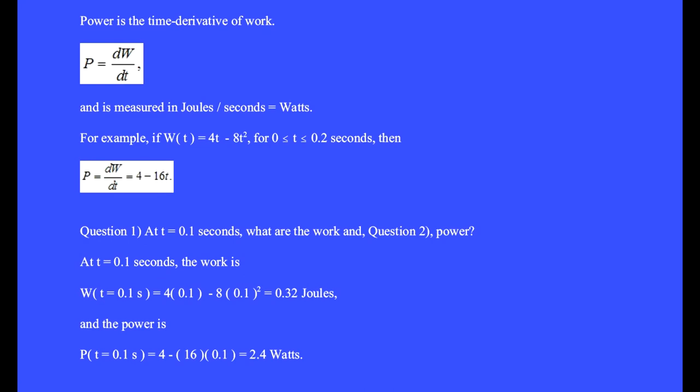For example, if the work varies in time as W(t) = 4t minus 8t squared, for t equals zero through 0.2 seconds, then the power equals dW/dt equals 4 minus 16t.